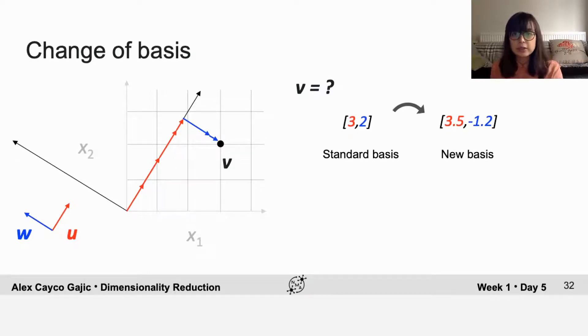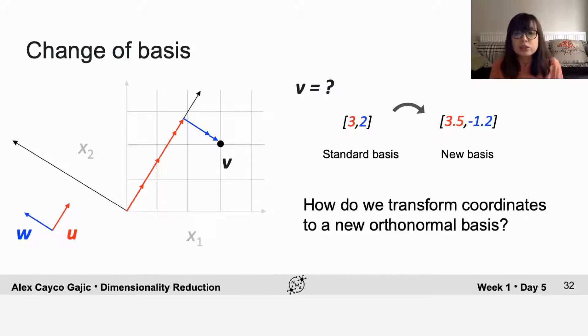Now that you know that the choice of representation of your data is a bit arbitrary, you might ask how can you transform from your old basis to a new basis? And this turns out to be particularly easy if we have a new orthonormal basis.